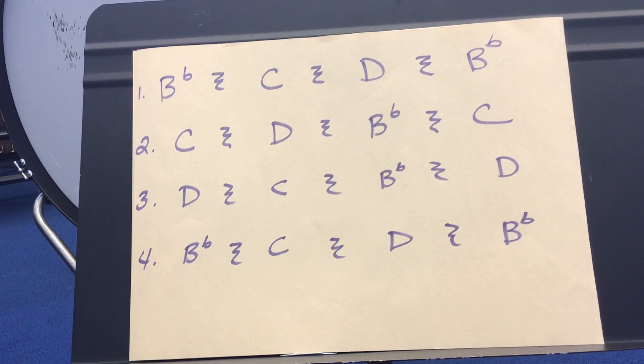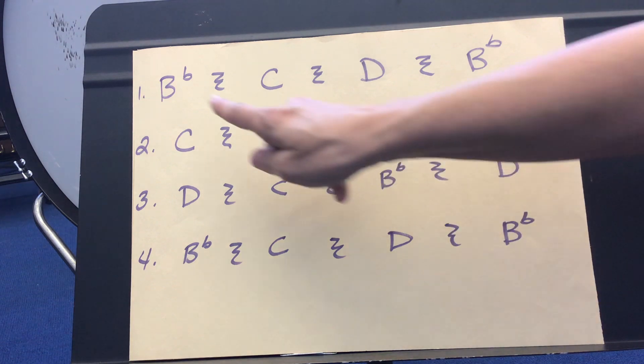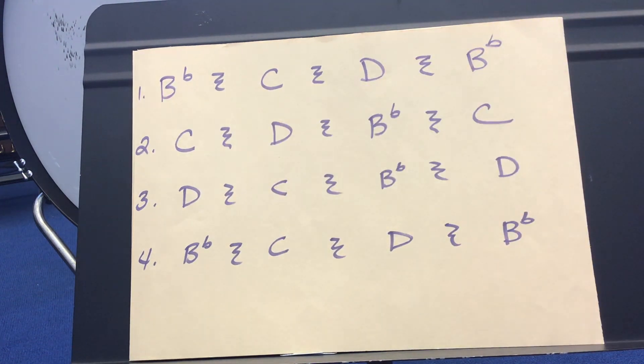Okay, grade 4 trombones, if you're looking at this video that means you are very close to getting your music book. We've already been working on B flat, C, and D, remembering our positions: B flat first position, C sixth position, D fourth position.